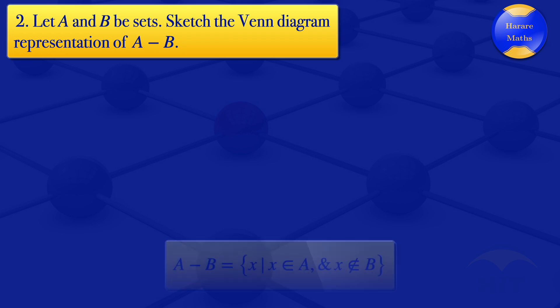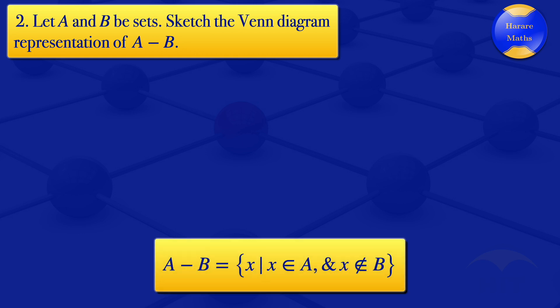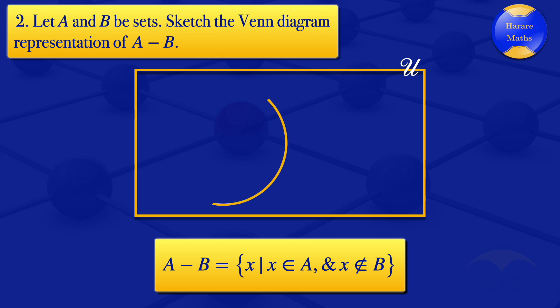By definition, A minus B is the set where we have x such that x is in the set A and x is not in the set B. So what I'll do, I'll start by drawing the universal set which is represented by a rectangle and label it the universal set there, and then draw the set A and label it A, and then draw the set B and label it B there.